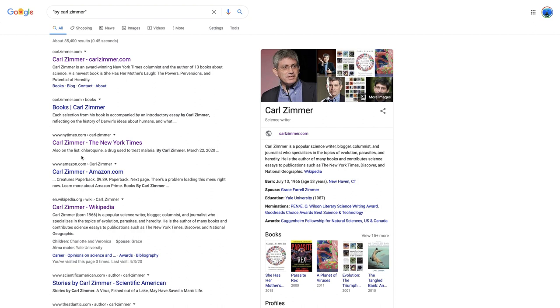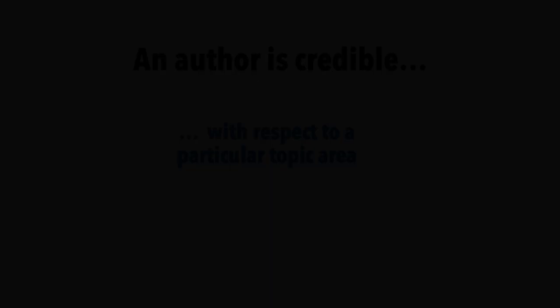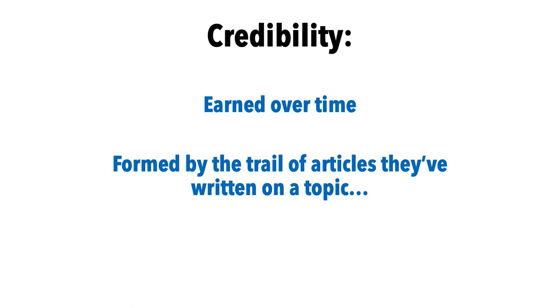The alternative is you search for an author and don't find any of these things — that should make you worry. If you don't see a Wikipedia page, a Scholar profile, or a byline trail, you should start to think maybe this person is not an authority on this topic and what they're writing is not credible. Note that an author is credible with respect to a particular topic area, and if you don't find a trail of evidence, it could be that they're just a new or young writer. Remember, credibility — like trust and authority — is something you earn over time. Look for that trail, then make your own call about whether or not you should trust them and what they've written.